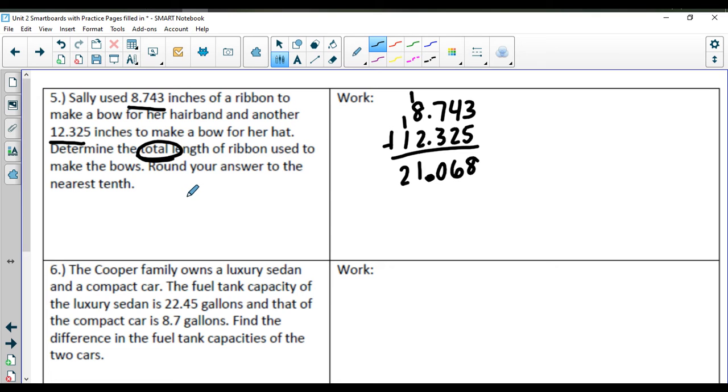It is a word problem, so we're going to need a label, and we're also going to have to round our answer to the nearest tenth. So tenth means one number after. That sixth is going to make this round up to 21.1 inches of ribbon.